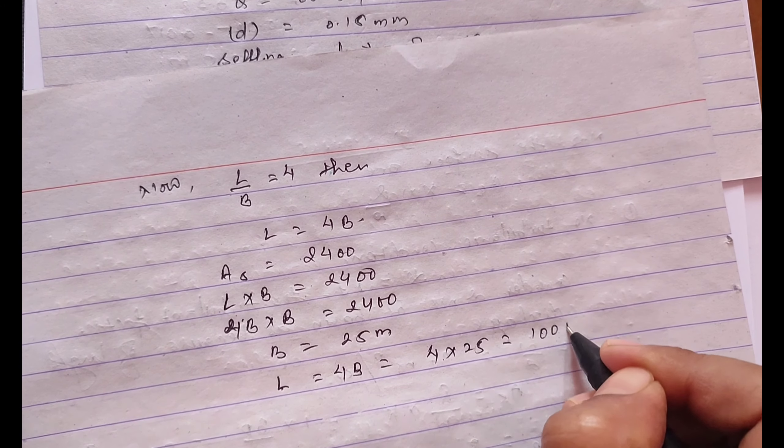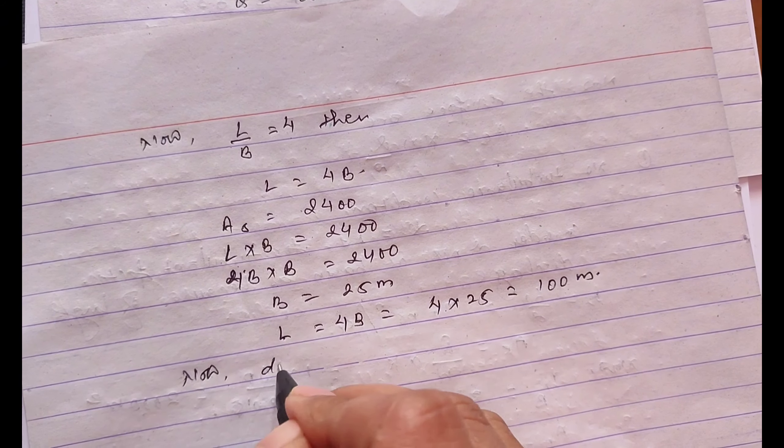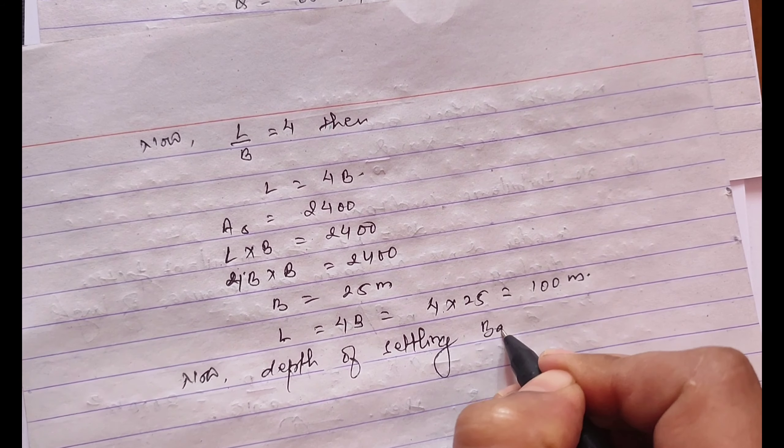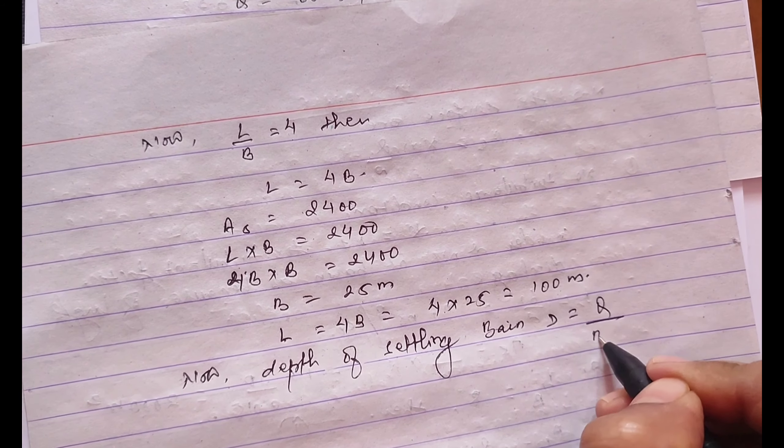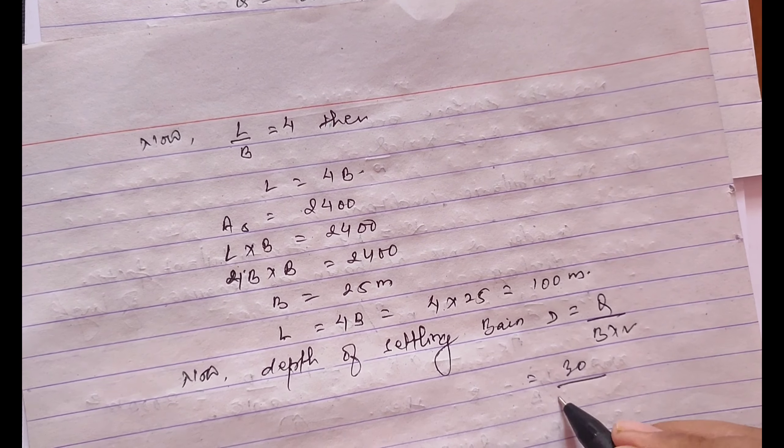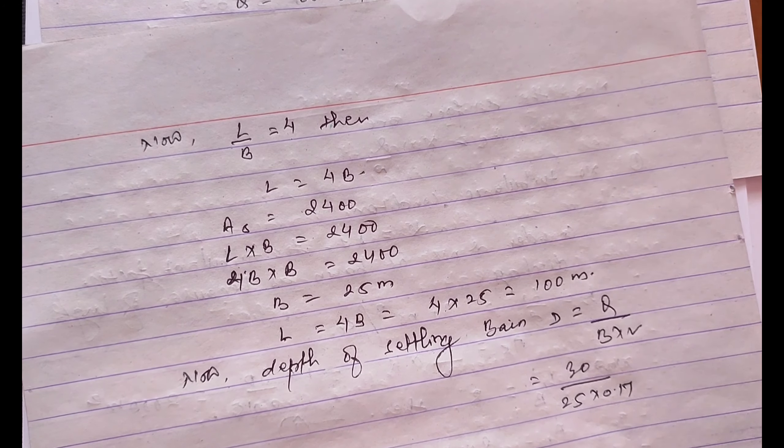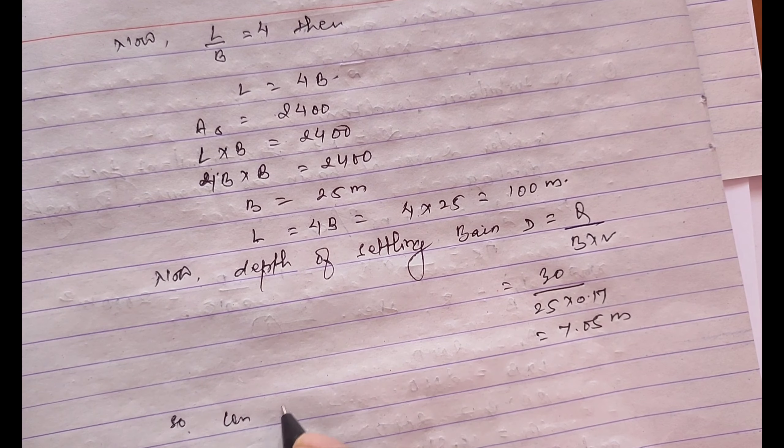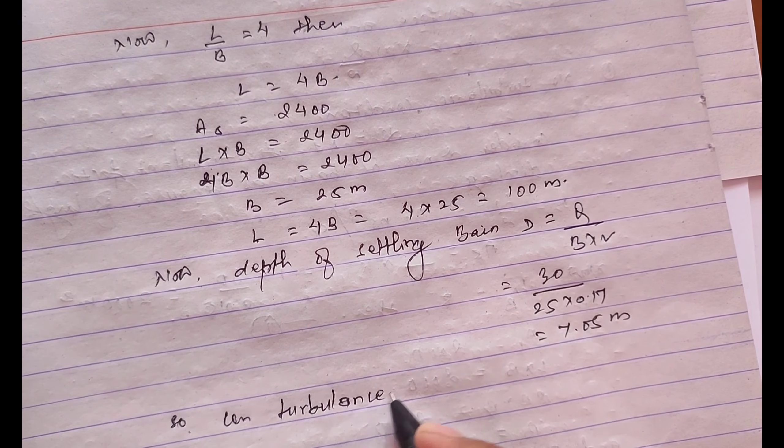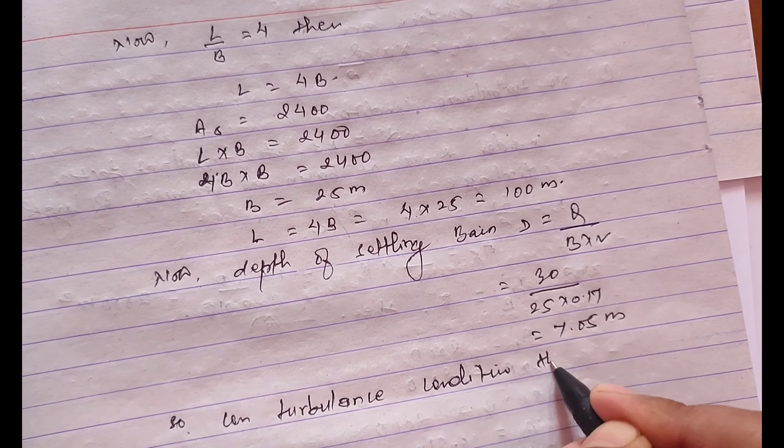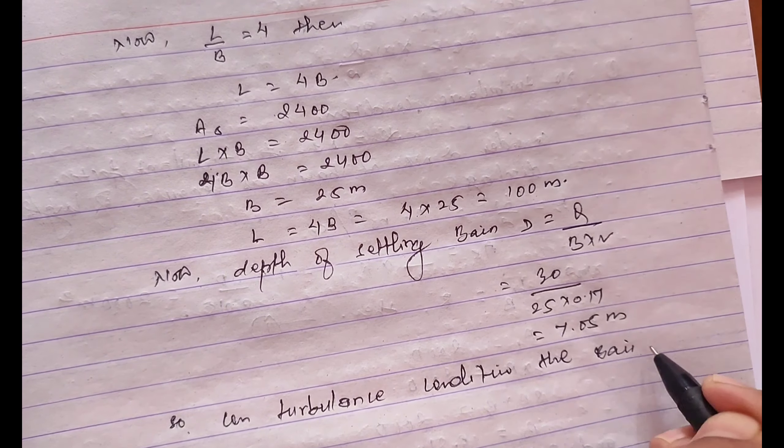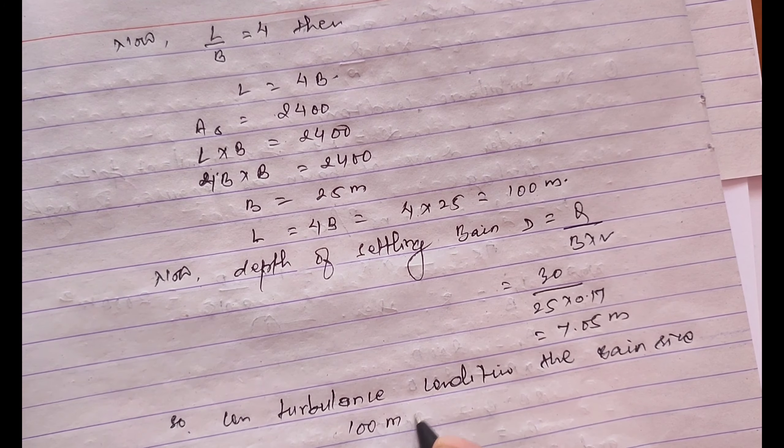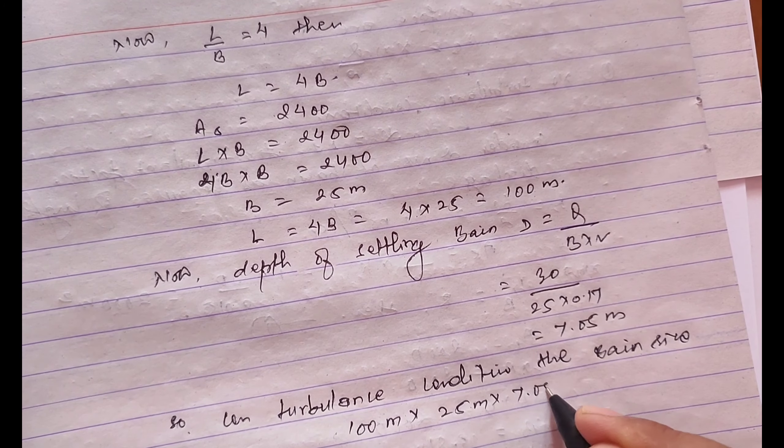Now the depth of settling basin d equals Q divided by b times v equals 30 divided by 25 times 0.17. The depth is 7.05 meter. So on turbulence condition the dimension of the basin will be 100 meter times 25 meter times 7.05 meter.